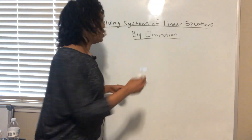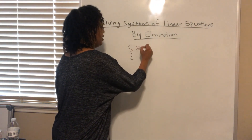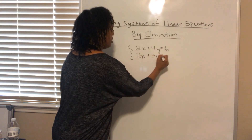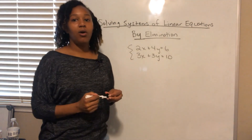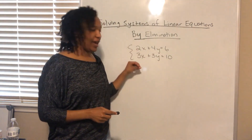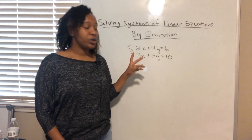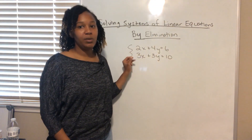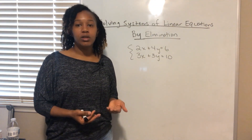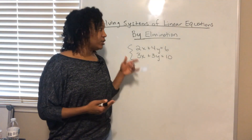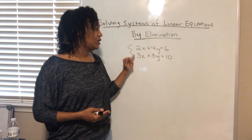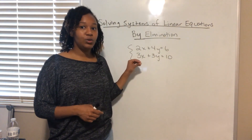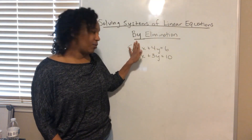The goal is to eliminate one of the variables. For example, if you have a system, you get rid of one of the variables by adding the two equations together. In order to get rid of one of these variables, they have to have the same coefficient, and one has to be positive and one has to be negative. So when we go through the steps for elimination, our whole goal is to get a variable that has the same coefficient where one is positive and one is negative.